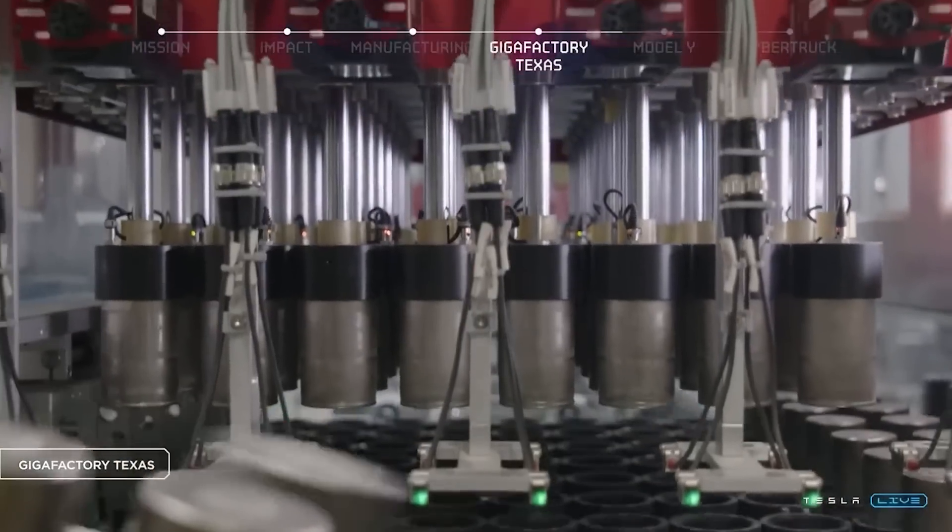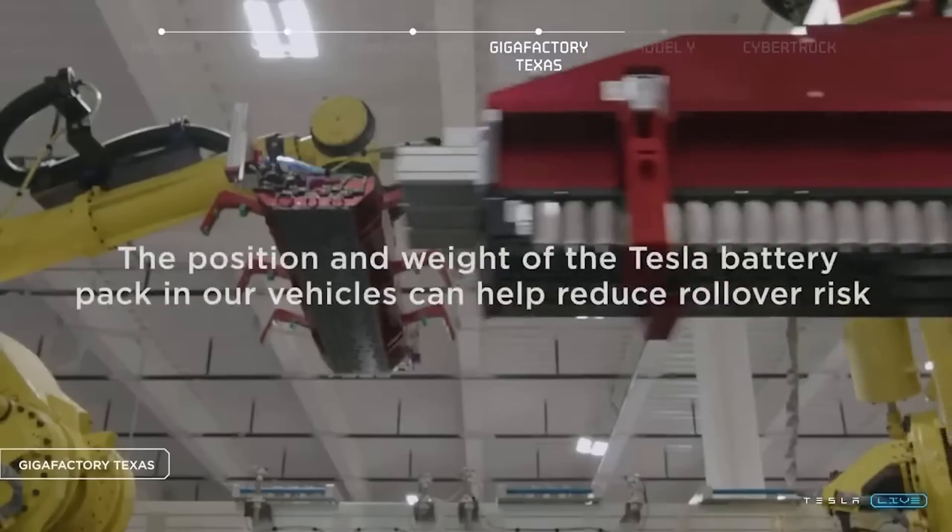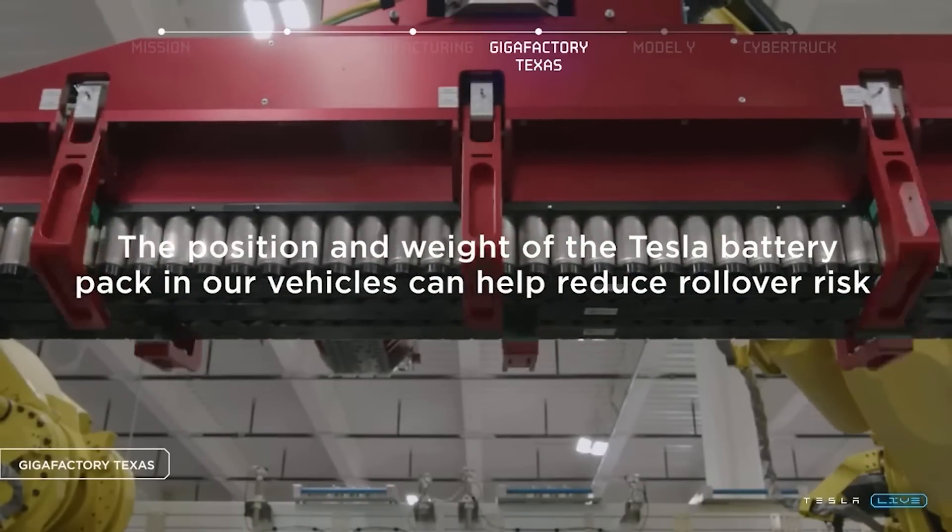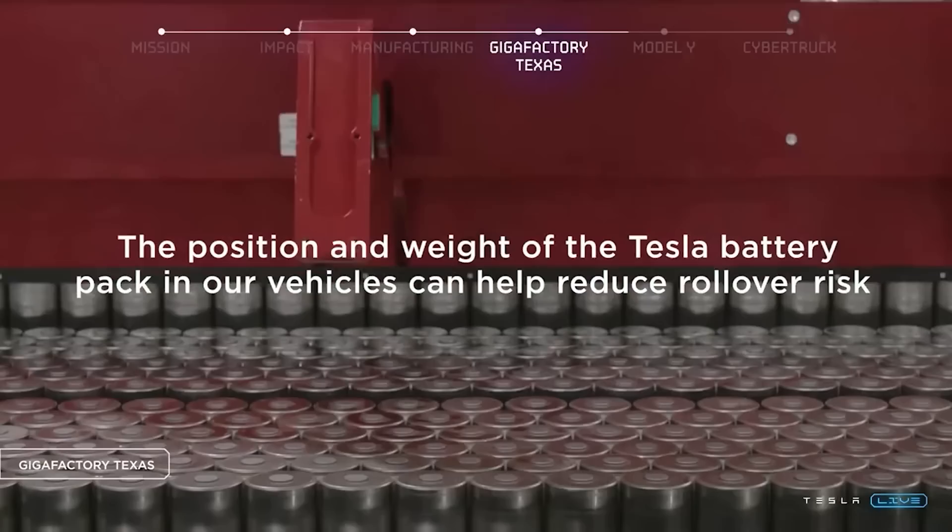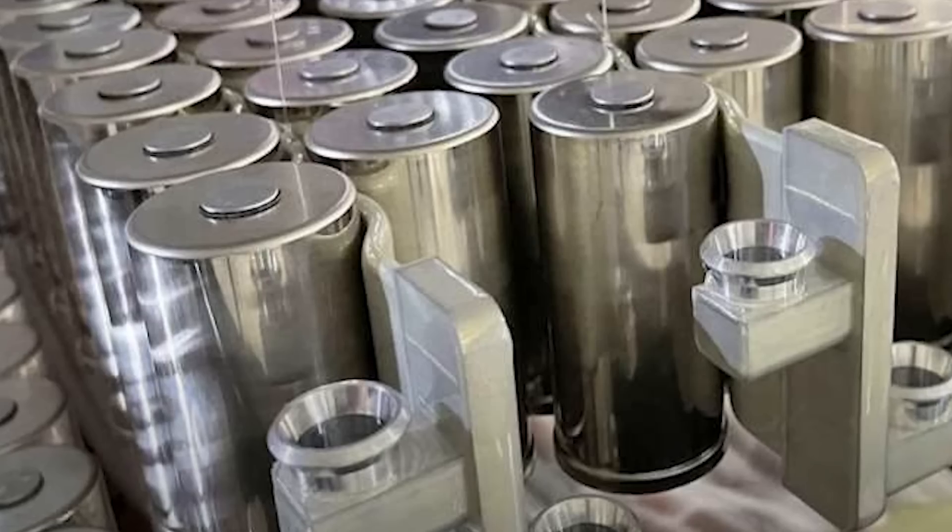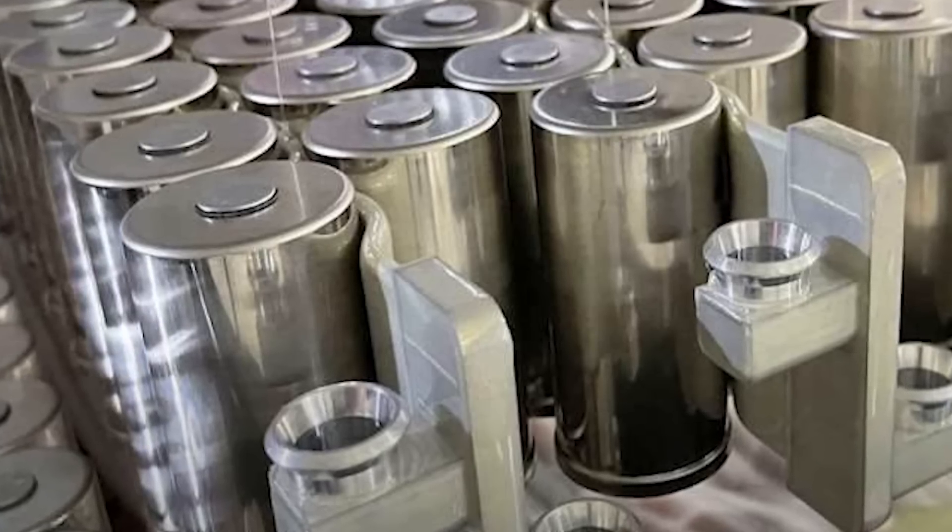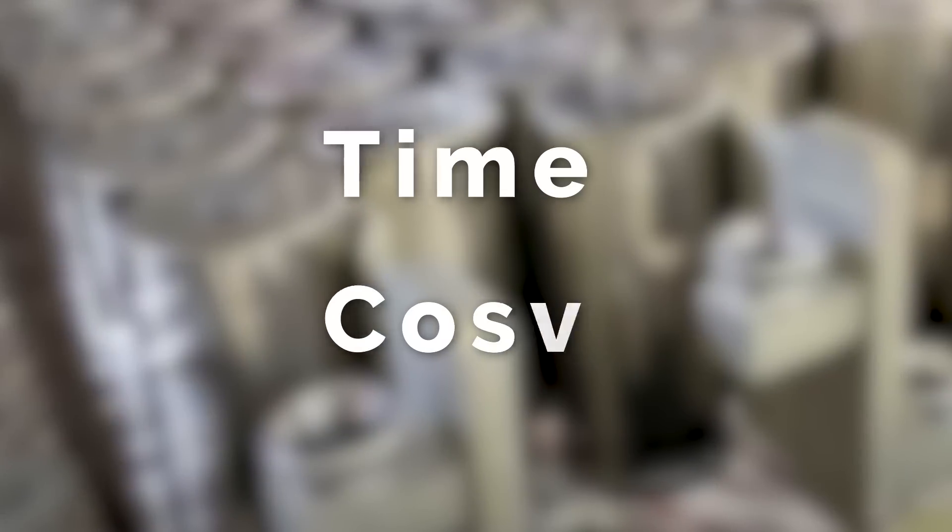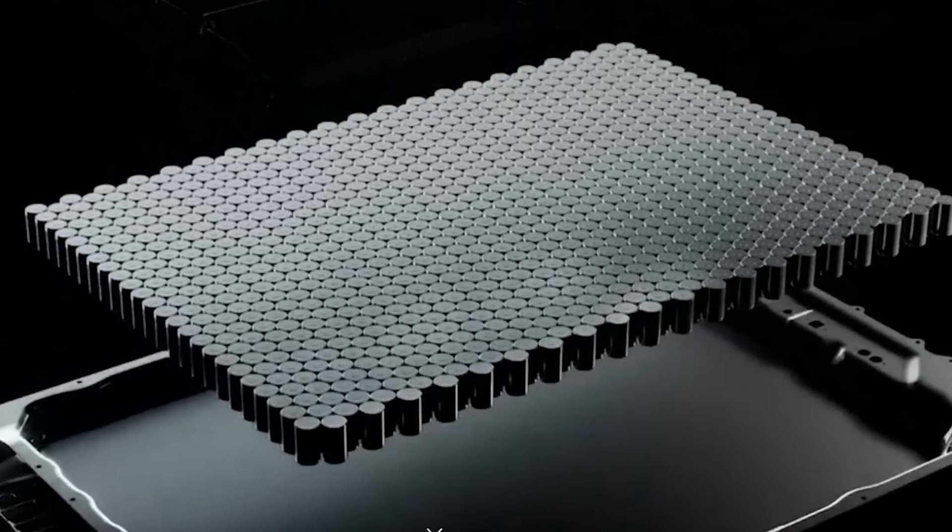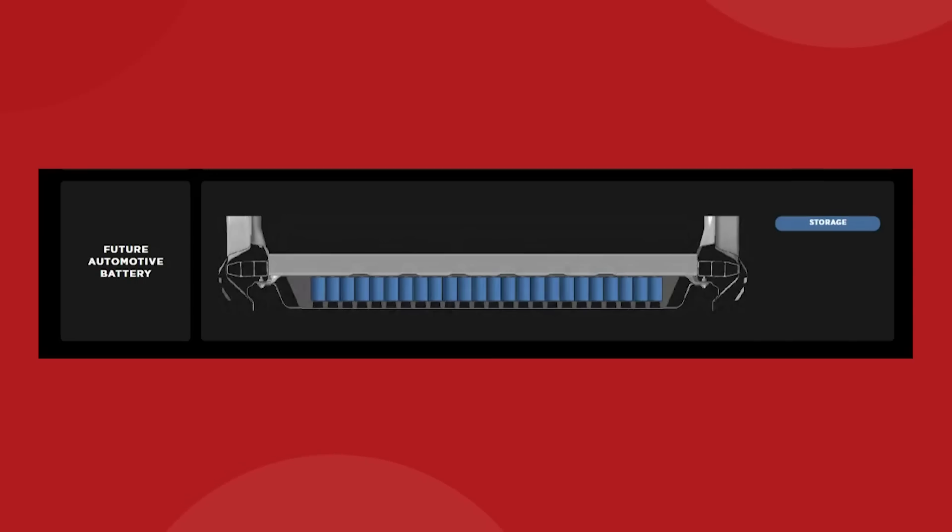It's important to remember that the 4680 isn't some magic battery. It's a pretty standard nickel-cobalt-manganese chemistry, as of right now at least. The advantages to 4680 are the prospective savings in time and cost when manufacturing, which doesn't exist right now, and the structural component. The structural battery pack is only possible with the 4680 cell, because it's so wide and rigid.